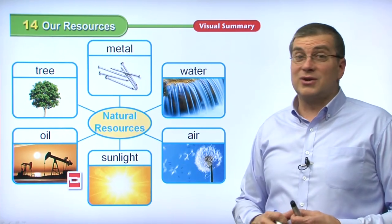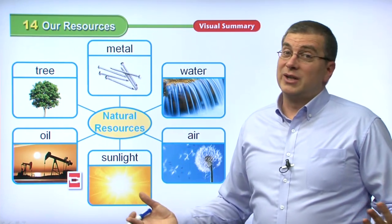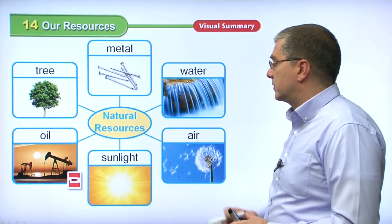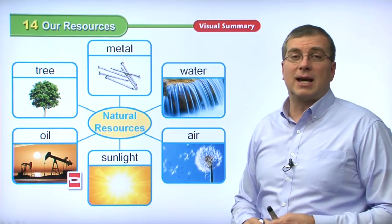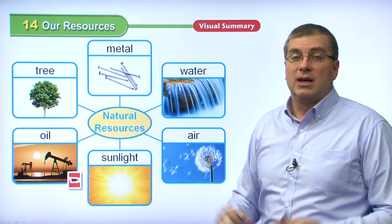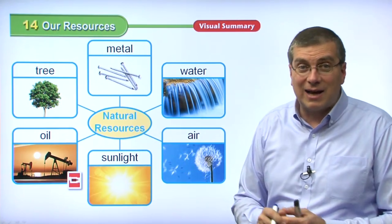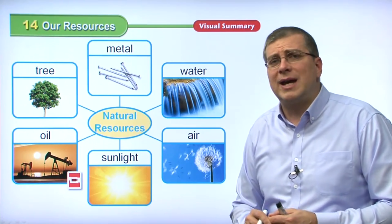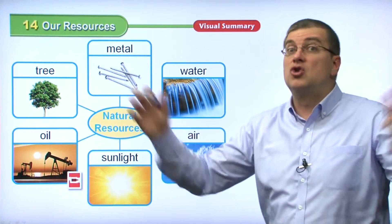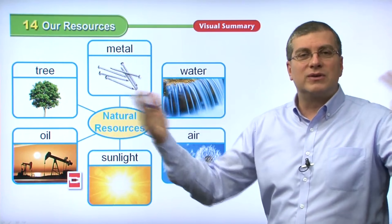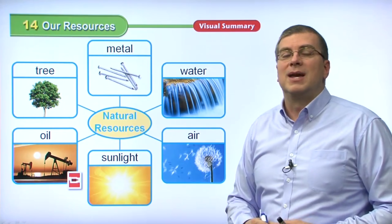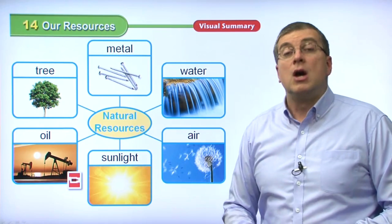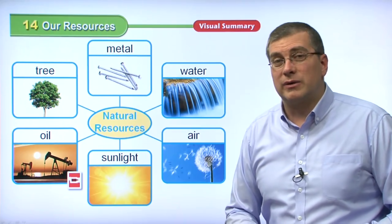Air is a natural resource. We use it — I'm using it right now. We all use air, so it's very important that we keep the air clean. Sunlight is also a natural resource. We all need sunlight to be happy and healthy. If we live underground in the dark without sunlight, we get unhealthy. So go outside and enjoy the sunlight. In fact, sunlight gives you vitamins through your skin — it's good for you, but don't get too much. Nowadays we also use sunlight for energy with solar panels.